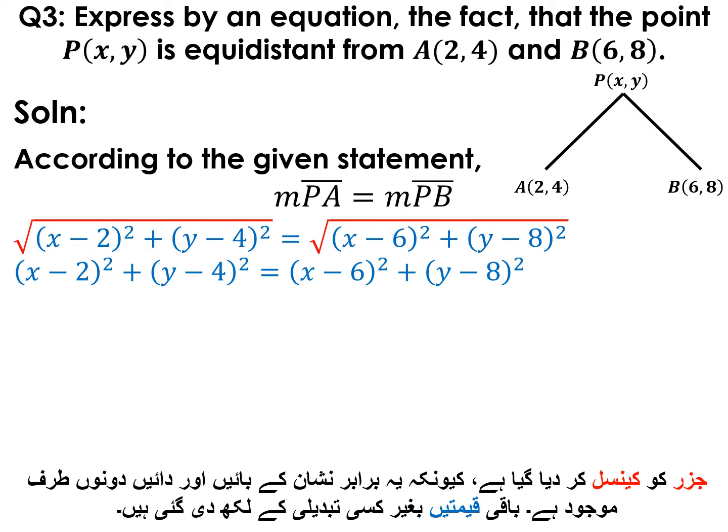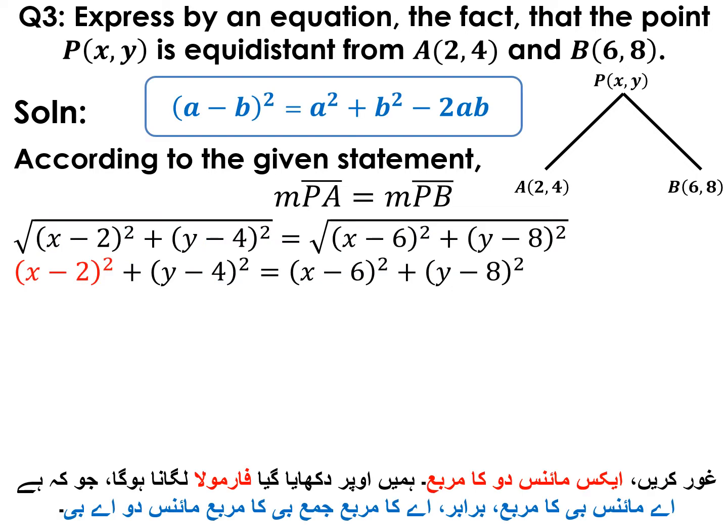The square root is cancelled because it is present on both the left-hand side and the right-hand side of the equal sign. The remaining values are written without any change. We now consider (x − 2)².